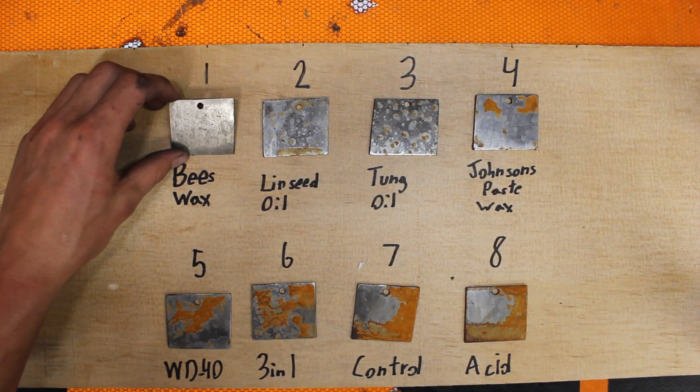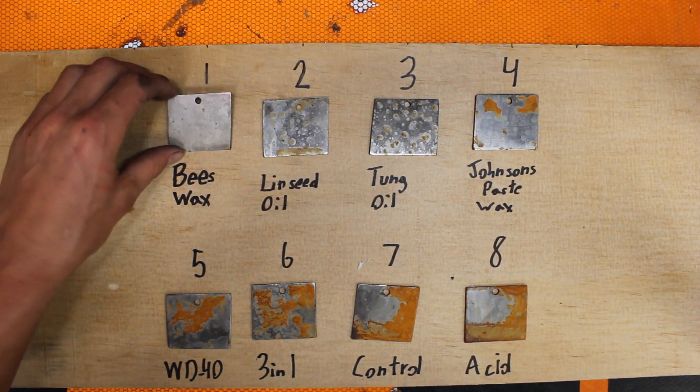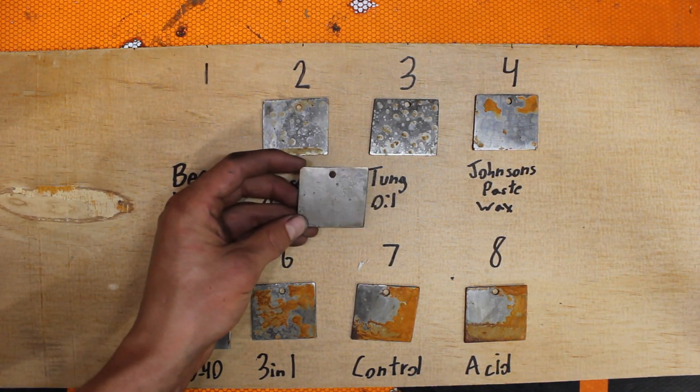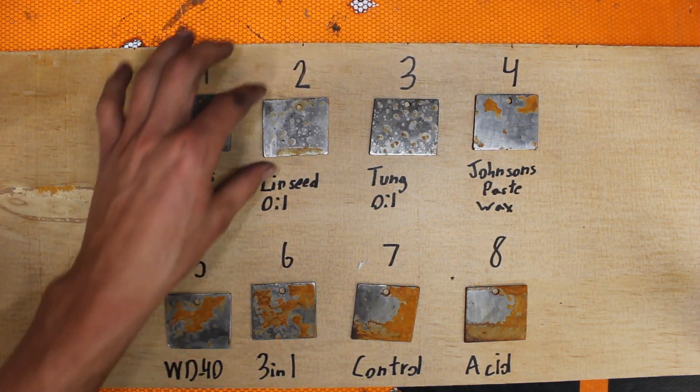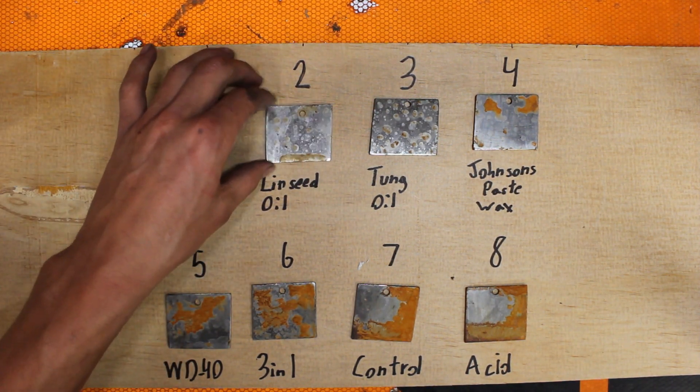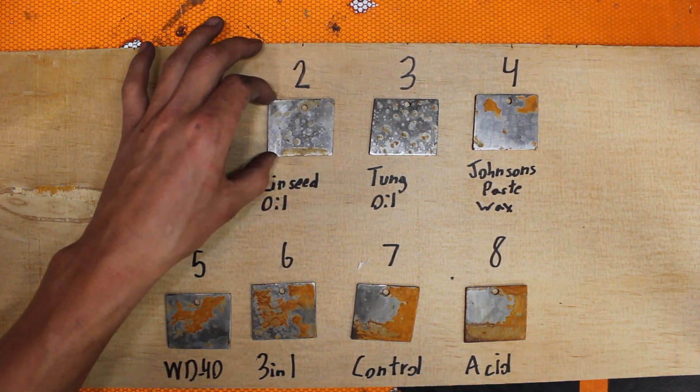Beeswax, the first one here, there is practically absolutely no rust on there. There's a little discoloration, I don't know how good you guys can see it, a little discoloration, no rust at all. Linseed oil, you start to get these teeny little spots of rust and a little bit down here, mainly though it's just discoloration, a little bit of rust.